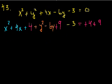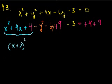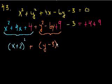Now let me rewrite this term right here. I added this plus 4 here for a reason, so that I could make this into x plus 2 squared. And then plus, and I added this plus 9 here for a reason, so I could make this y minus 3 squared.